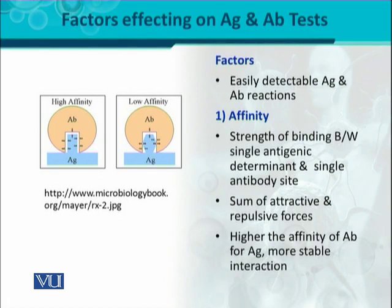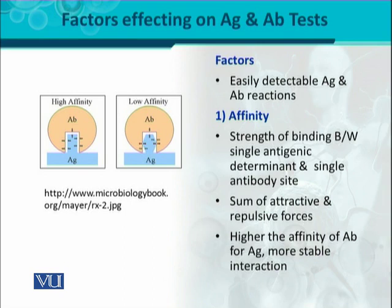We should know how easily we can detect the antigen-antibody reaction, because these are serological reactions. Serum میں اگر ہم antigen اور antibody find out کر رہے ہیں تو جب antigen-antibody reaction ہو جائے گا تو how would we be able to detect کہ antigen کا antibody کے ساتھ reaction ہوا ہے یا نہیں۔ So the first important factor is affinity. Affinity is the strength between the single antigenic determinant and single antibody binding site.